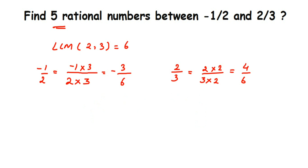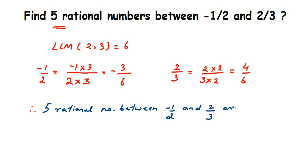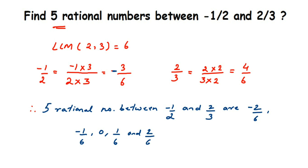Therefore, the 5 rational numbers between minus 1 by 2 and 2 by 3 are: minus 2 by 6, minus 1 by 6, 0, 1 by 6, and 2 by 6. You can also write 3 by 6, but do not include 4 by 6. You can pick any 5 rational numbers between minus 3 by 6 and 4 by 6 — it is not necessary to take only these.